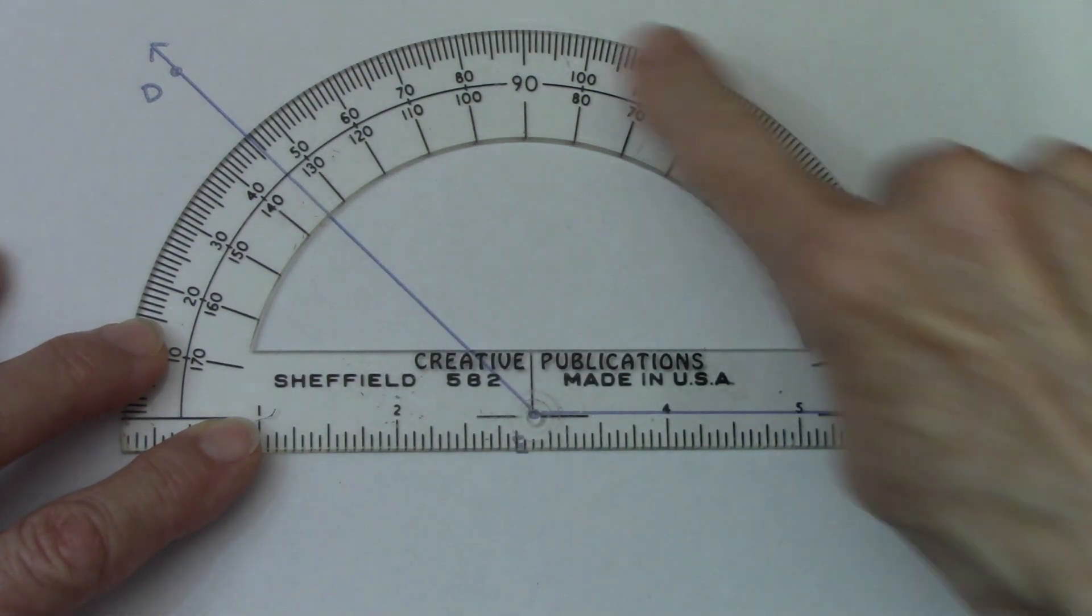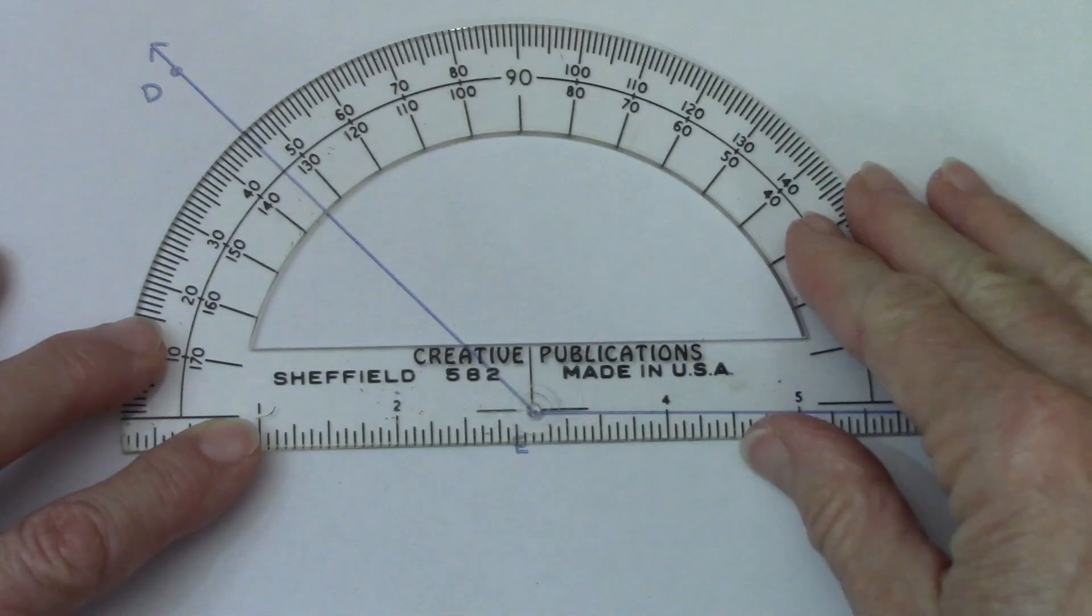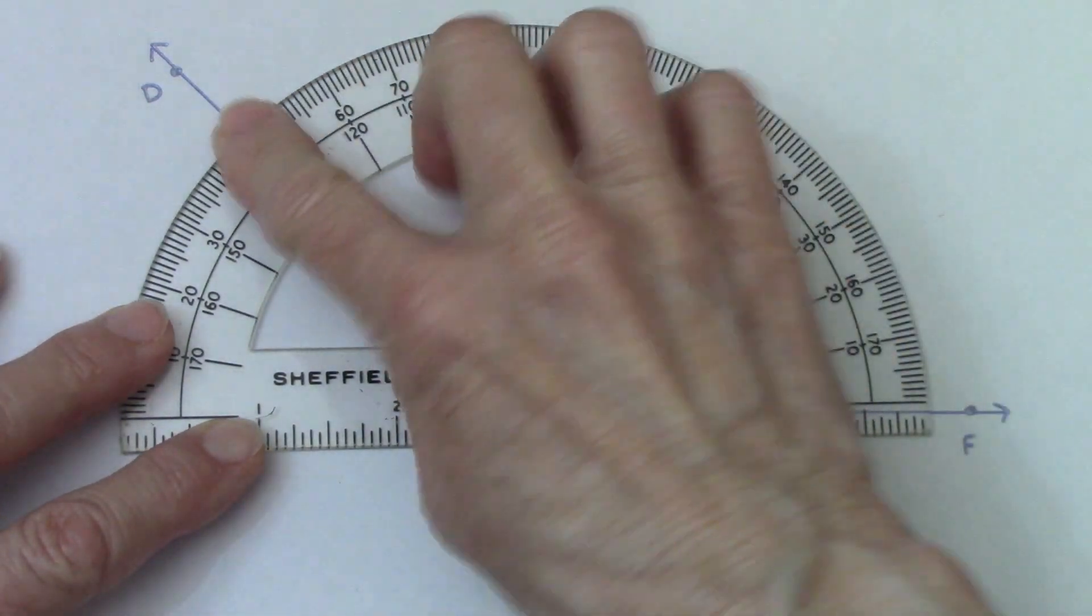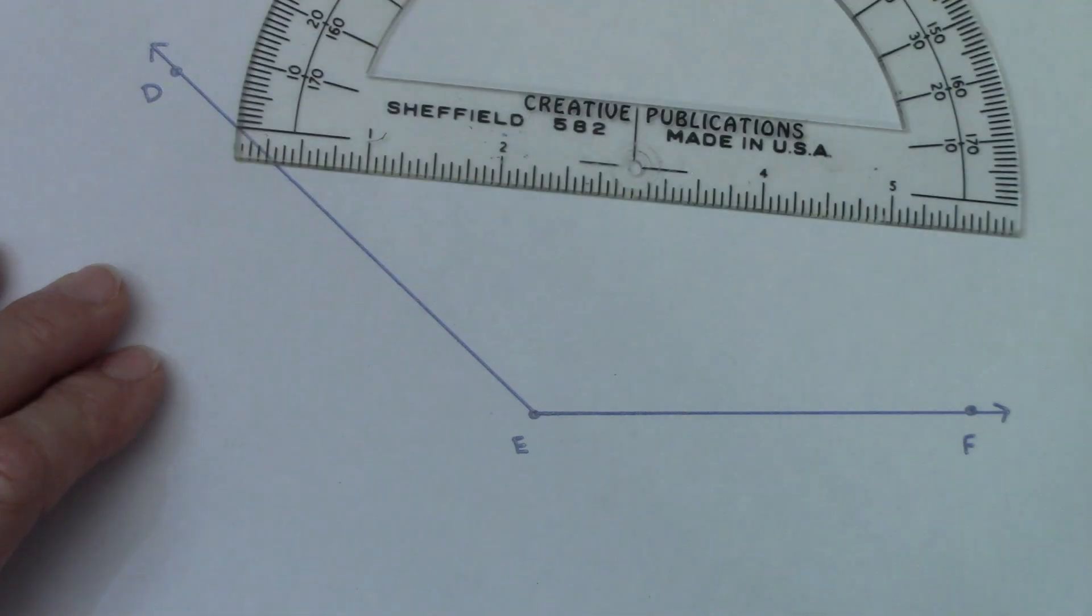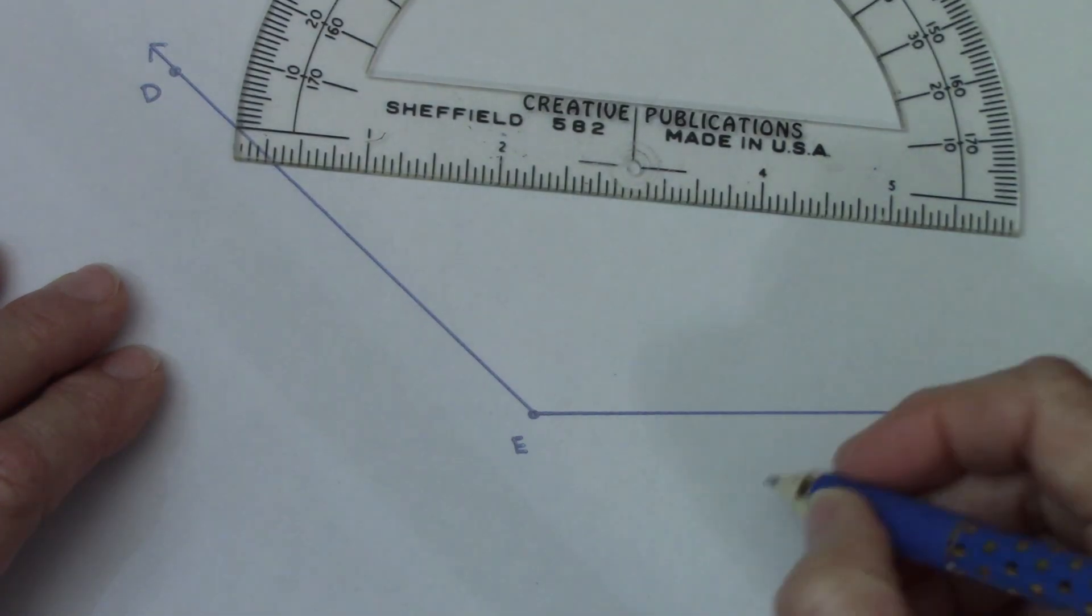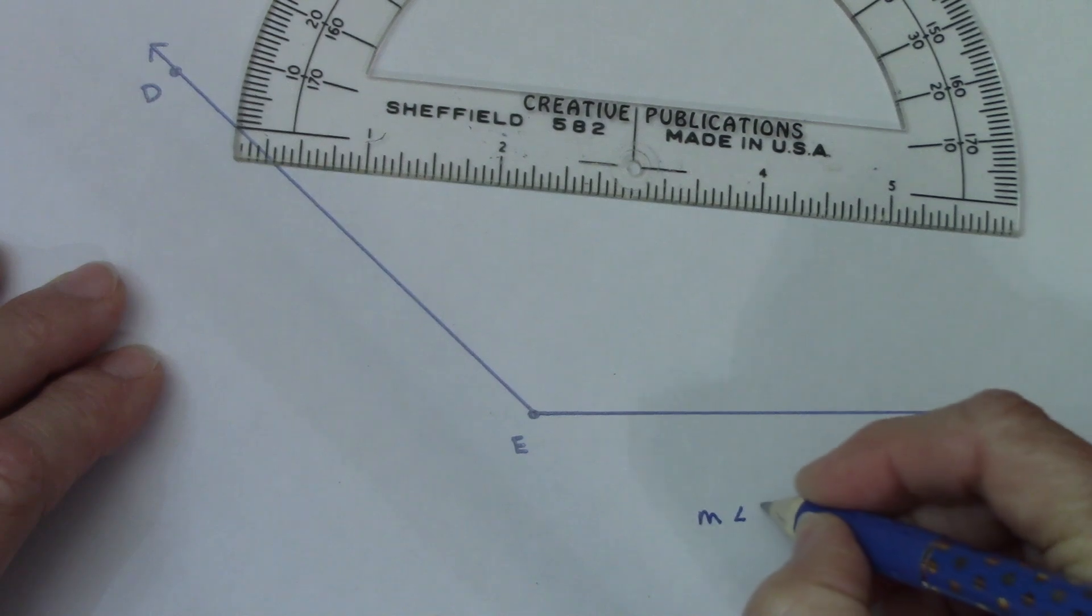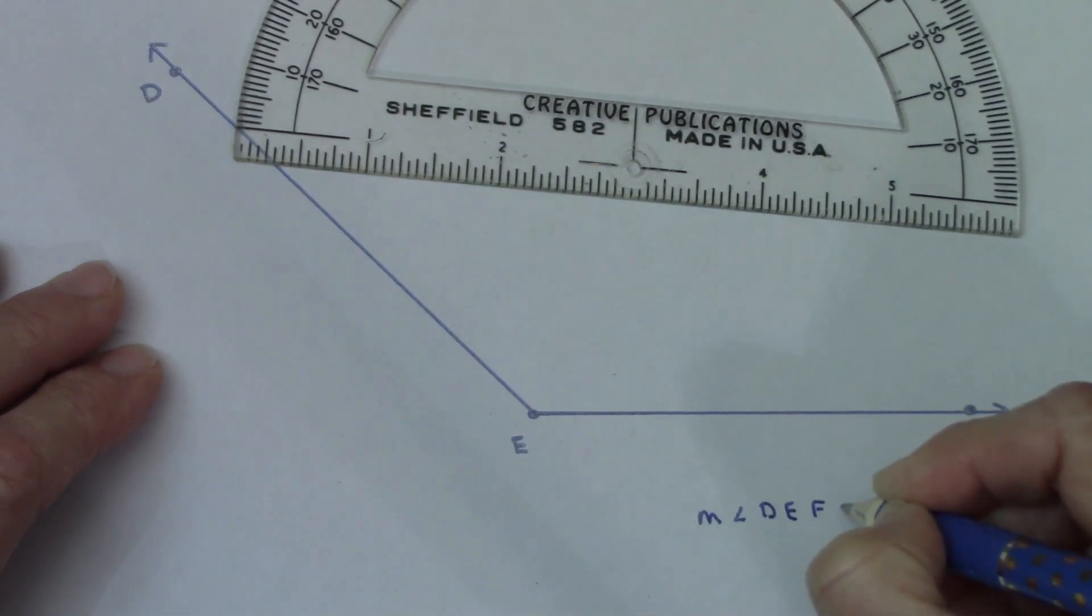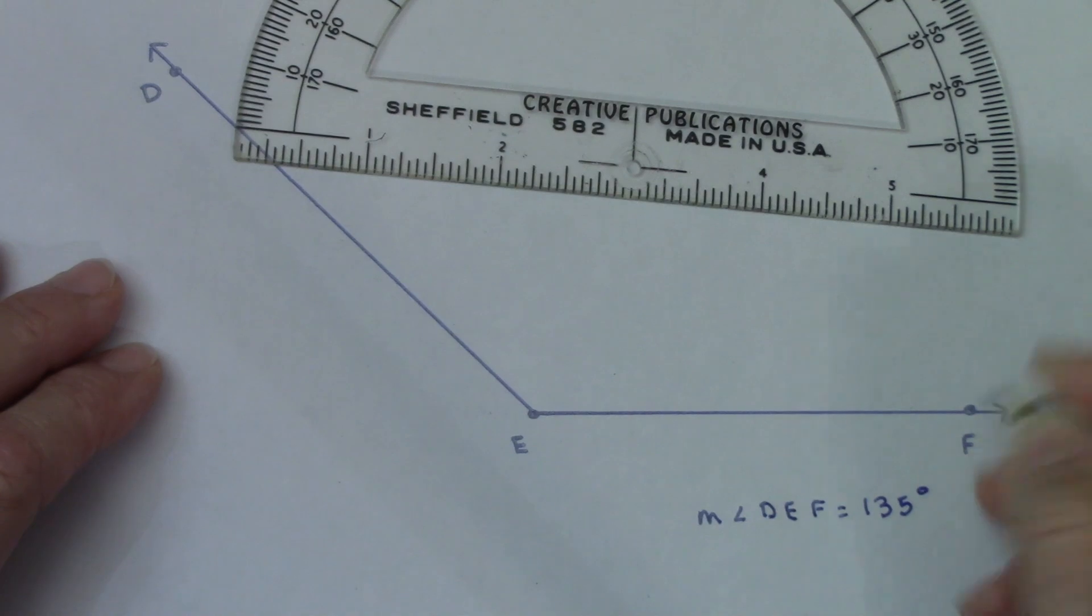We can see that right here is ninety. So we see that the angle is bigger than ninety degrees. So I can say that the measure of angle DEF equals a hundred and thirty five degrees.